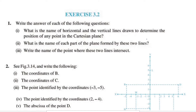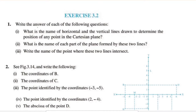This is the first question: write the answer of each of the following questions. What is the name of the horizontal and vertical line drawn to determine the position of any point in the Cartesian plane?